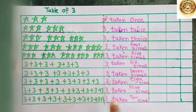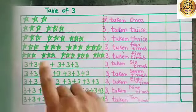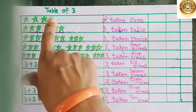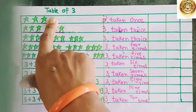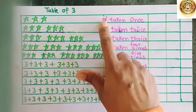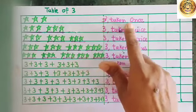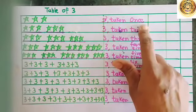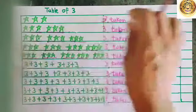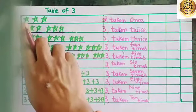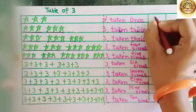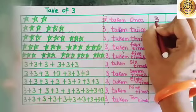Now, here we can see we have to add the number 3. Here, 1 time. So it will be 3 taken 1 time. Then what will be the total? If you have taken 3 once, that is equal to 3.